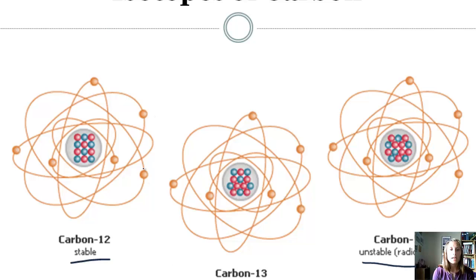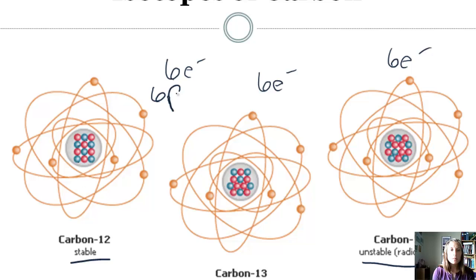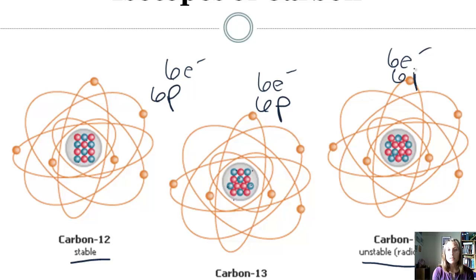Looking at the diagrams, the orange particles are electrons — all three carbon isotopes have 6 electrons. The blue particles are protons — all three have 6 protons. Because the number of protons identifies the element, all carbon atoms must have 6 protons, and counting confirms that each diagram shows 6 protons.